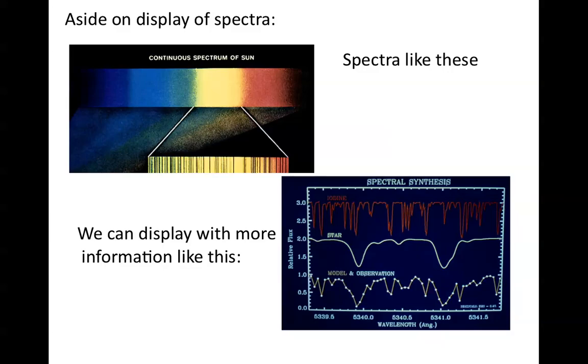If you take a spectrum of an object, you will see a lot of very fine absorption lines that correspond to transitions between two states in different atoms. Take, for example, the sun. In the top spectrum, you see the rainbow that you get by shining sunlight through a prism.